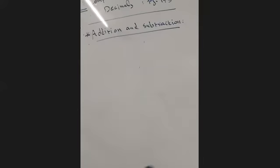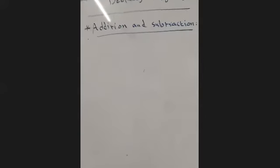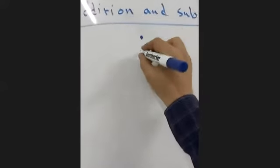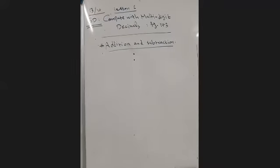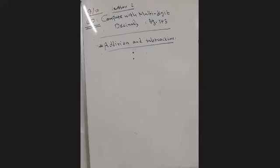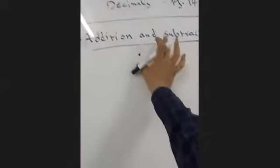Before doing example one, the most important thing in addition and subtraction of decimals is to align the two numbers correctly. You need to put the decimal under the decimal, then align digits to the left and to the right, and add or subtract normally.